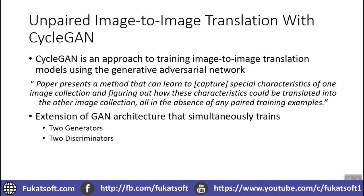We need paired examples in order to translate images, so we needed a solution that could do it without paired examples. Here comes the research that proposed CycleGAN in order to perform image-to-image translation with unpaired images. CycleGAN is an approach to train image-to-image translation models using generative adversarial networks. It presents a method that can learn special characteristics of one image collection and figure out how these characteristics could be translated into another image collection in the absence of paired training examples.